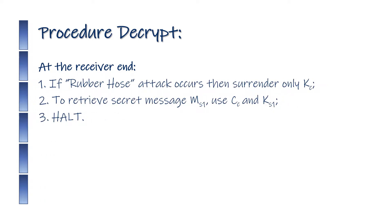Procedure Decrypt — At the receiver end: (1) If a rubber hose attack occurs, then surrender only KC. (2) To retrieve secret message MS1, use CC and KS1. (3) Halt.